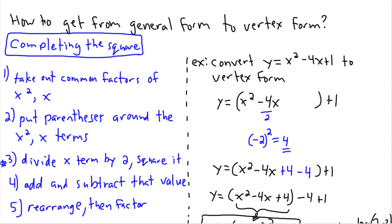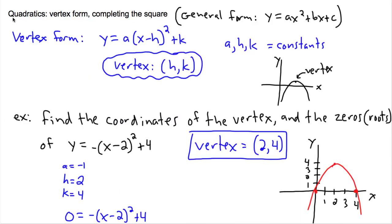Let's take a look at another example of how to complete the square. Remember what we're doing, we're trying to get from general form to vertex form. And back to what we were looking at before, general form is ax squared plus bx plus c and vertex form looks like this.